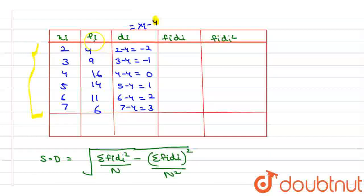Now we have to multiply f_i and d_i so we can get here minus 8, minus 9, and here 0, here 14, here we can write as 22 and here 18. Now from here we can say that this is basically equal to 16, 9, 0, 14, 44.